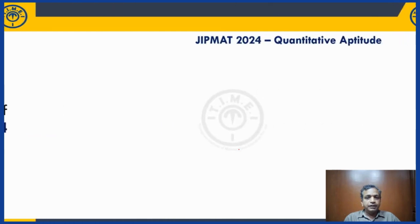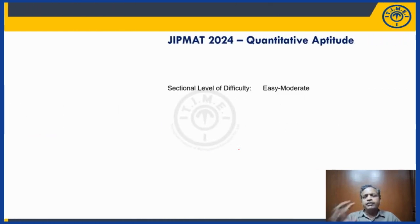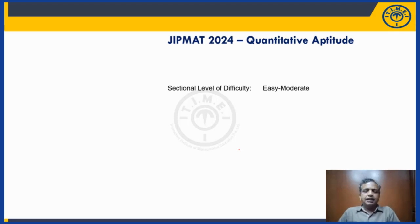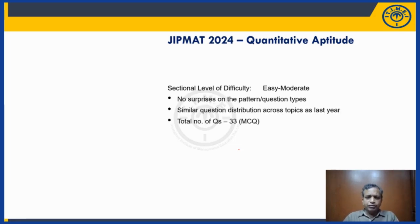Let's now look at the detailed sectional analysis, starting with Quantitative Aptitude. The overall difficulty level this year can be described as easy to moderate. The question distribution across topics was very similar to last year, with no difficult or uncrackable questions. This analysis is based on student feedback from those who took the test. There were no new question types, and the overall pattern remained the same — 33 questions, with a similar topic distribution as last year.